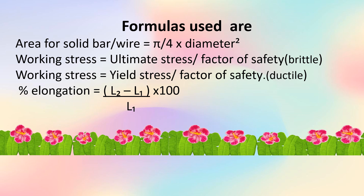Other formulas used are: for area of a solid bar or wire, pi by 4 into diameter square. For working stress of brittle material, working stress equals ultimate stress divided by factor of safety. For ductile material, working stress equals yield stress divided by factor of safety. Percentage elongation equals L2 minus L1 in bracket divided by L1 into 100.